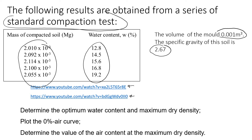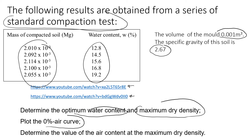In this video, we are going to analyze the results and find the optimum water content and the maximum dry density for this soil. We will then plot the results and also plot the zero air voids (ZAV) curve — the theoretical curve — and then determine the value of the air content at the maximum dry density.